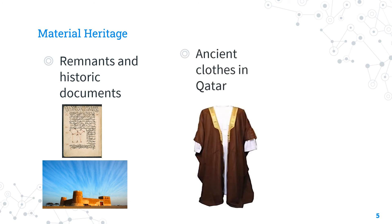Second, we have ancient clothes in Qatar. Popular Qatari and Khaliji clothes are considered some of the most important examples of heritage that give Qatar a distinct character. Examples include men's clothes such as al-bishtan and al-thoub, and women's clothes such as wukhnukan and al-nashal dress.